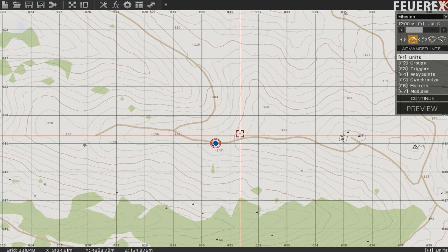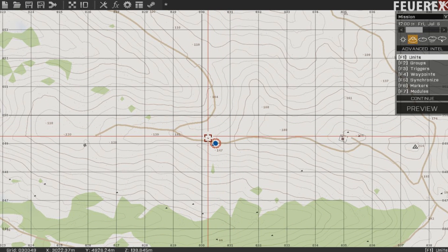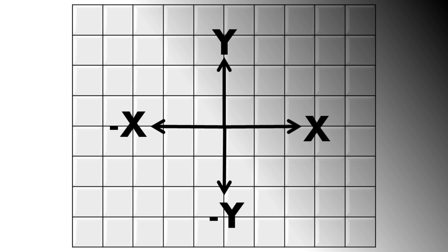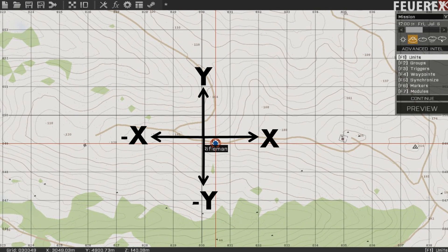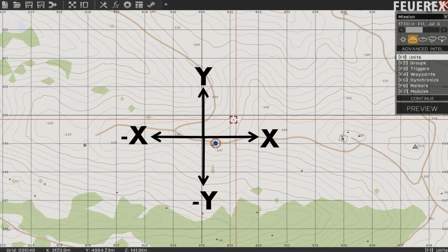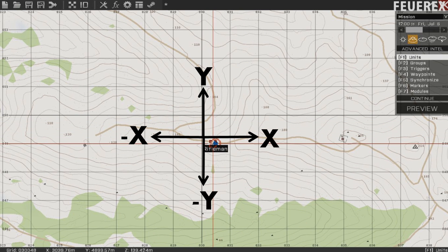If you are familiar with 2D and 3D planes, this will be much easier for you. Two dimensions are simple. You have two axes: the x-axis that always indicates values from left to right, and the y-axis for values from top to bottom. This rule is exactly the same in the ARMA series — in the editor window you have the x-axis and y-axis.